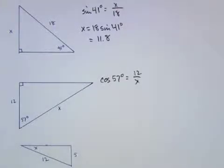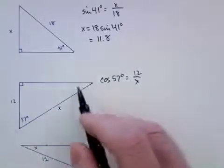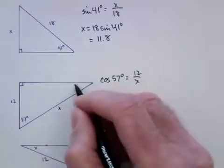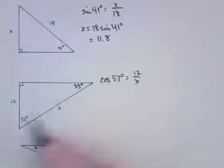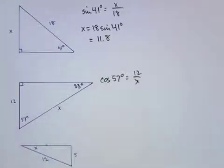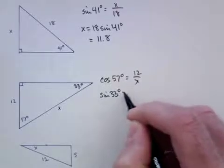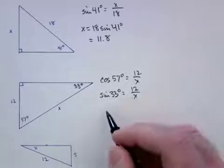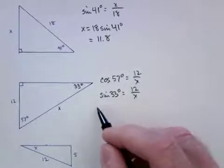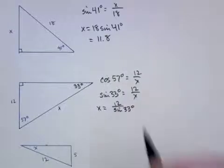This is a bit of an issue because we don't have a cosine scale. However, we know that if that is a 57 degree angle, then this must be a 33 degree angle because the two acute angles in a right triangle have to add to 90 degrees. So I can just as easily say that the sine of 33 degrees is 12 over x, and a little bit of algebra gives us that x is 12 over the sine of 33.